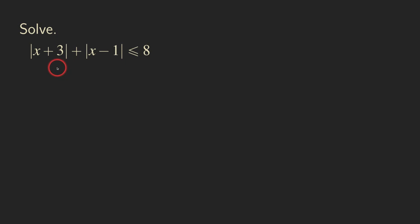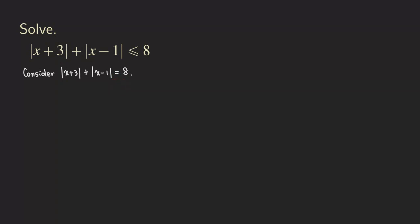First we are going to solve the equation. We consider the equation: absolute value of x plus 3, plus absolute value of x minus 1, is equal to 8. To solve this equation, we are going to break the problem down into multiple cases so that we can remove the absolute values.